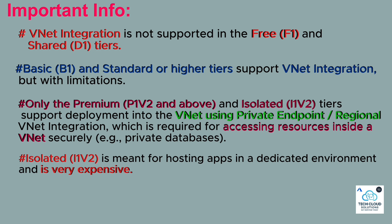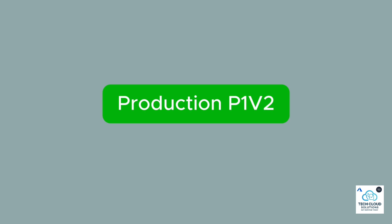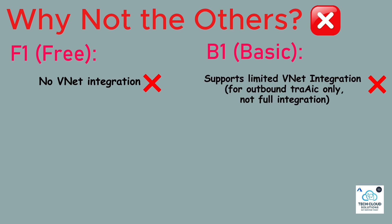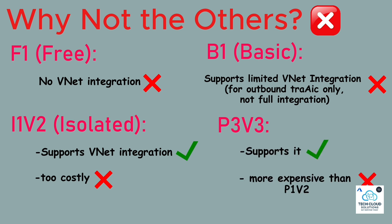Isolated I1V2 is meant for hosting apps in a dedicated environment and is very expensive. P1V2 supports VNet integration and is much cheaper than Isolated. Correct answer: Production P1V2. Why not the others? F1 (free) — no VNet integration. B1 Basic — supports limited VNet integration for outbound traffic only, not full integration. I1V2 Isolated — supports VNet integration but too costly; the question asks to minimize costs. P3V3 supports it, but is more expensive than P1V2.